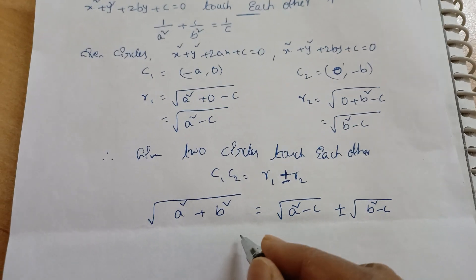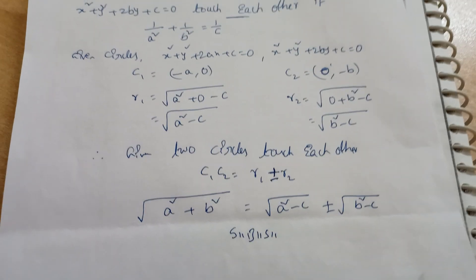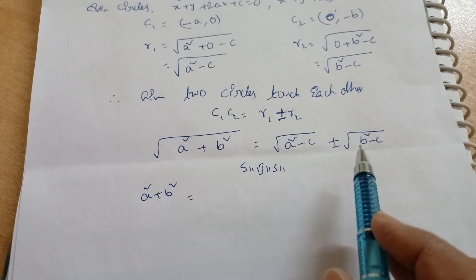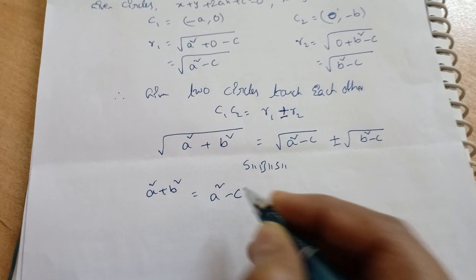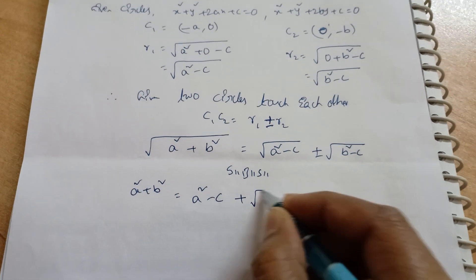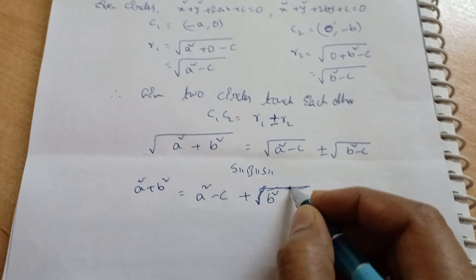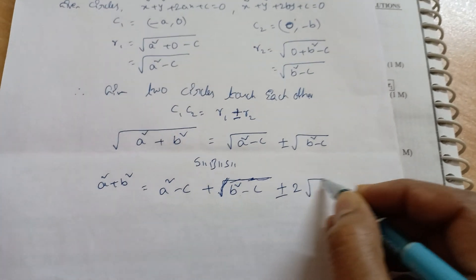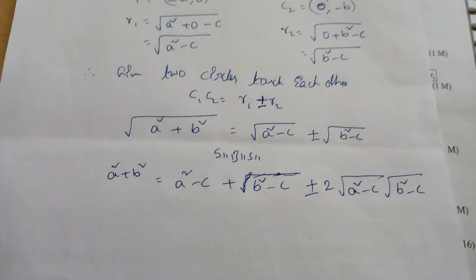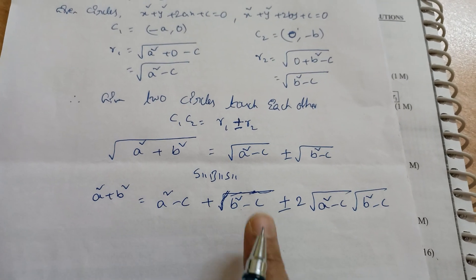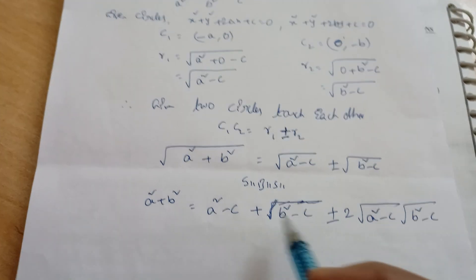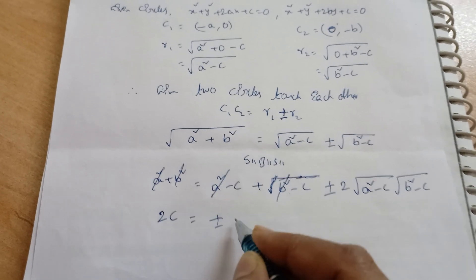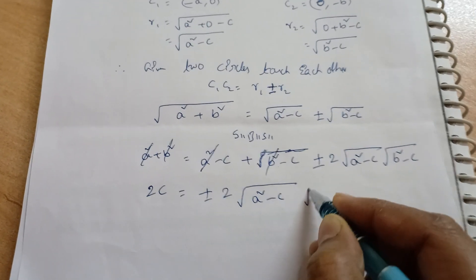Since there are square roots, we square both sides. The left side becomes a² + b². The right side is (√(a²−c) ± √(b²−c))², which expands using (A ± B)² = A² + B² ± 2AB, giving: (a² − c) + (b² − c) ± 2√(a²−c)·√(b²−c). The a² + b² cancels from both sides, and −c − c = −2c moves to the left side giving 2c = ±2√(a²−c)·√(b²−c).